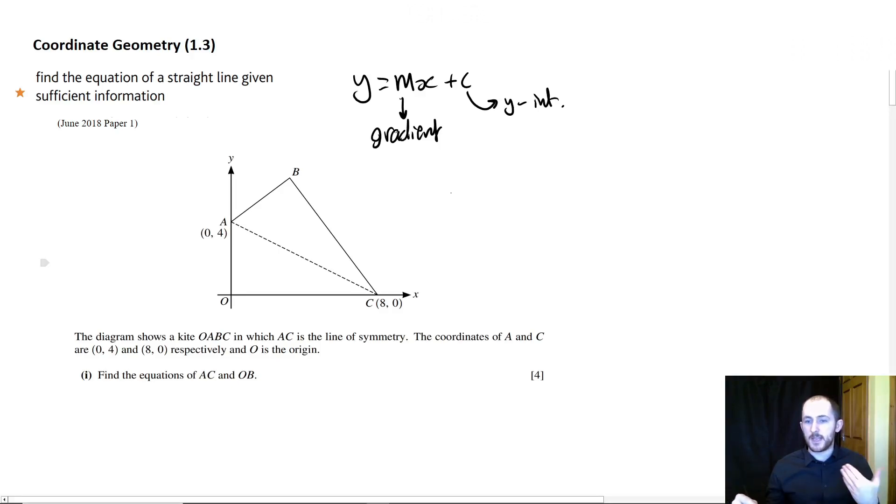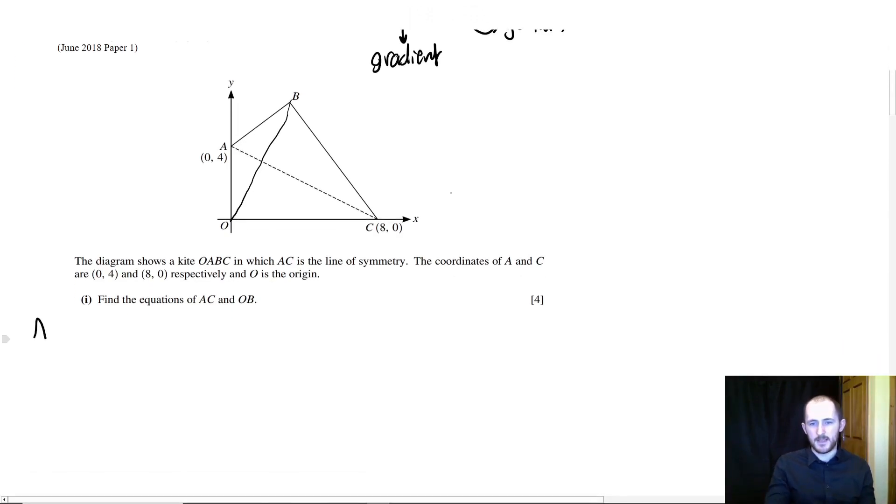However, I picked a pretty challenging question from the 2018 paper 1, and it gives us a kite, and AC is a line of symmetry. That's an important thing to remember about a kite, is that it is symmetrical. The coordinates of A and C are 0, 4 and 8, 0 respectively, and O is the origin. We need to find the equations of both AC and OB.